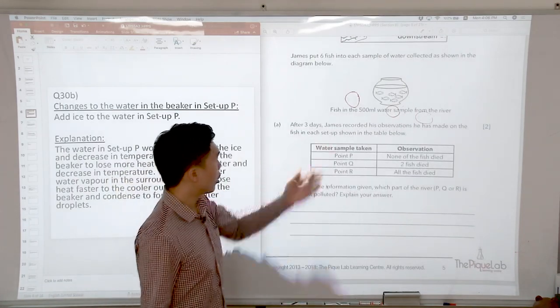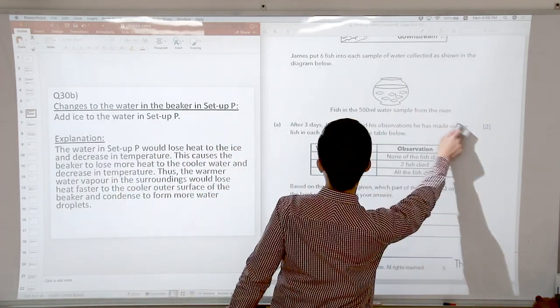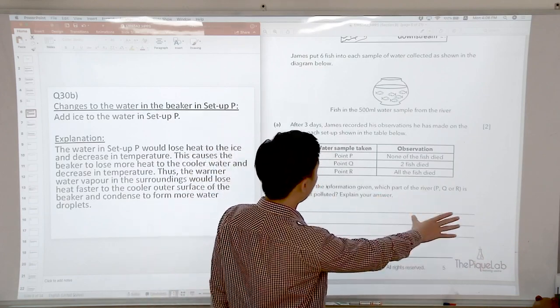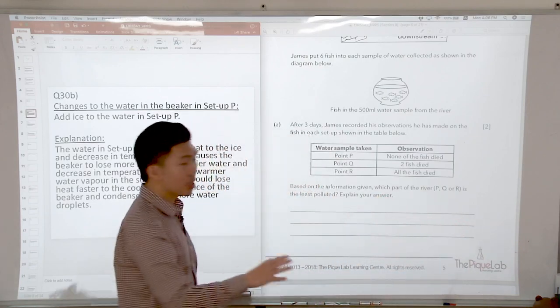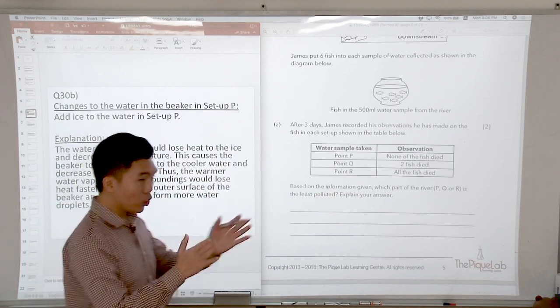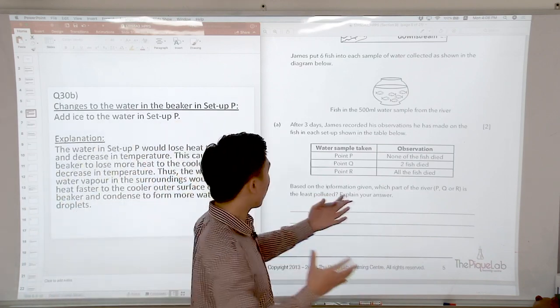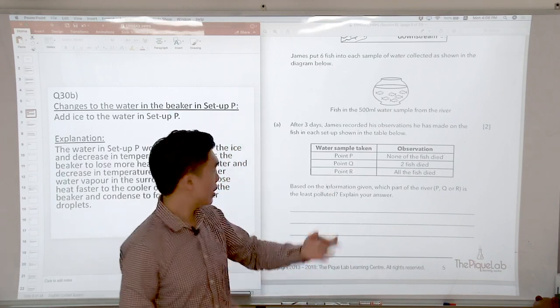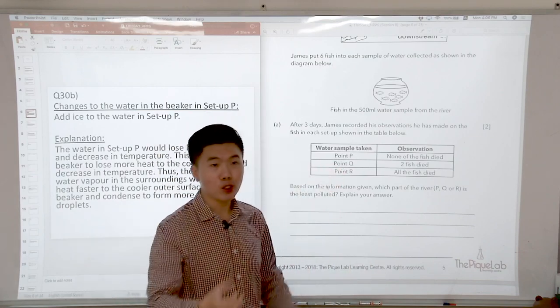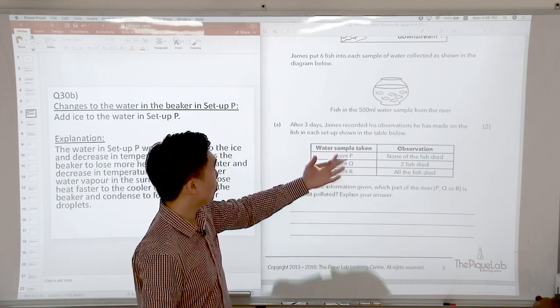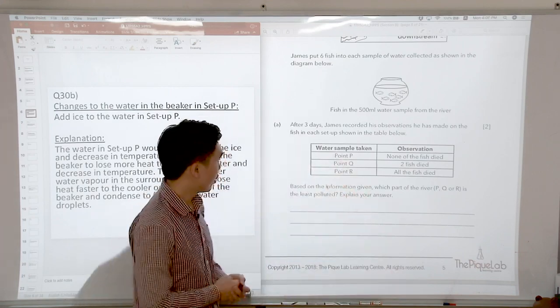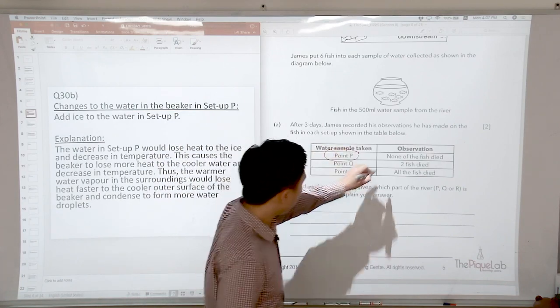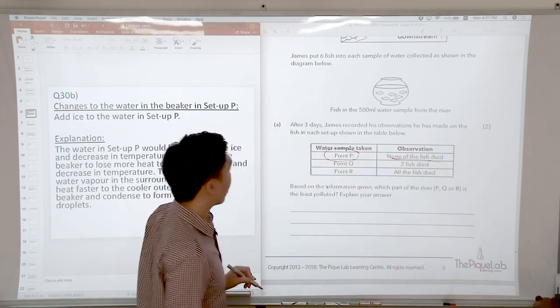After 3 days, James recorded his observations that he has made. Based on the information given, which part of the river is the least polluted? So if you are looking at least pollution, you are looking at the water sample where it did not affect the fish, because it is likely that the fish died due to the pollution that came from the farm and the factories. So based on this, based on the information given, I will choose point P because none of the fish died.